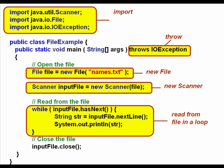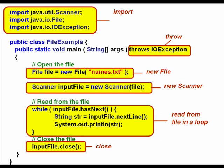So we say while inputFile.hasNext and we read from the file. This example is just reading a line of text and writing it back out to the screen. And then finally the last thing you need to do is close the file.